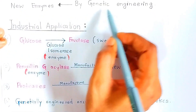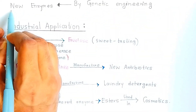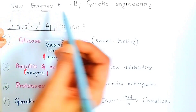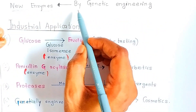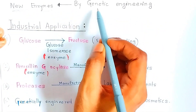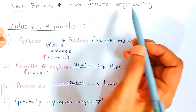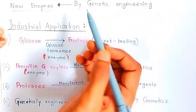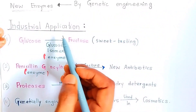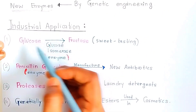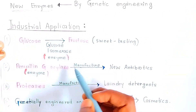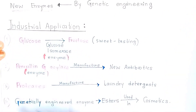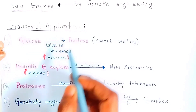By genetic engineering, you can create new enzymes nowadays. Whichever type of enzyme you want, you can prepare it with the help of genes. Through genetic engineering you can make new enzymes. There are also four types of industrial applications where enzymes are used in industries.